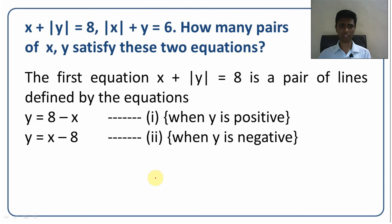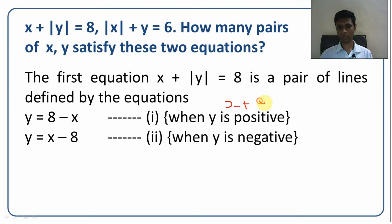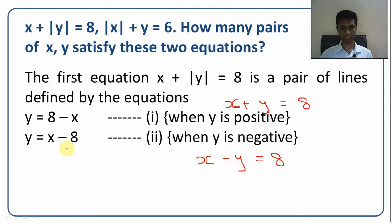Taking the first equation, x plus mod y equals 8, I can break this into two cases. When y is positive, this becomes x plus y equals 8, or y equals 8 minus x. When y is negative, this becomes x minus y equals 8, or y equals x minus 8. So this equation is not a single straight line — it is a combination of two straight lines.